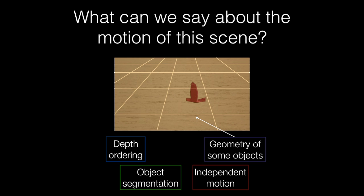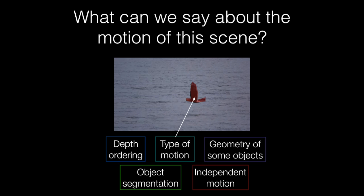We also know the geometry of some of the objects. For example, the surface of the water will be roughly planar. Finally, we know the type of motion of some objects. For example, the bird will be moving non-rigidly.